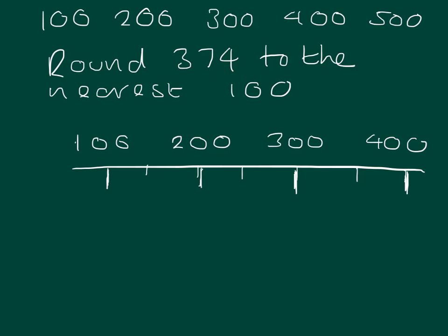We're given the number 374, and we're asked to round it to the nearest 100. So we can see that 374 is over 300, but less than 400. So it's somewhere between the two numbers. Now our halfway point between 300 and 400, we should know, is 350.